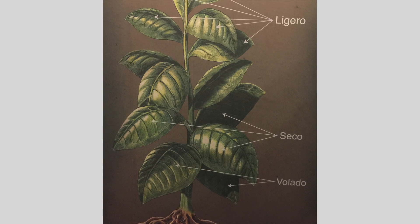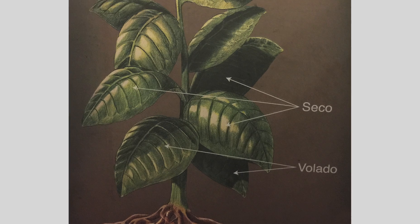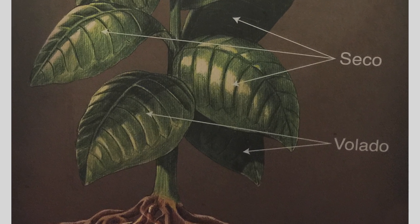The first area — the first three primings, or three rows of tobacco — is going to be volado. Volado is going to give you some great things from the tobacco: it's going to burn very well because it's a light wrapper. But the problem with volado is it's going to be firstly tasteless tobacco and the body is going to be near zero.